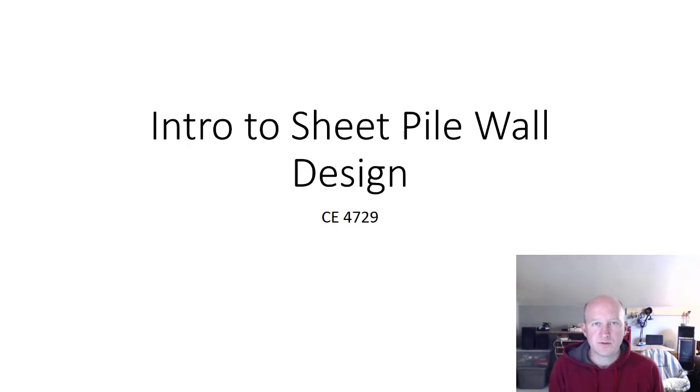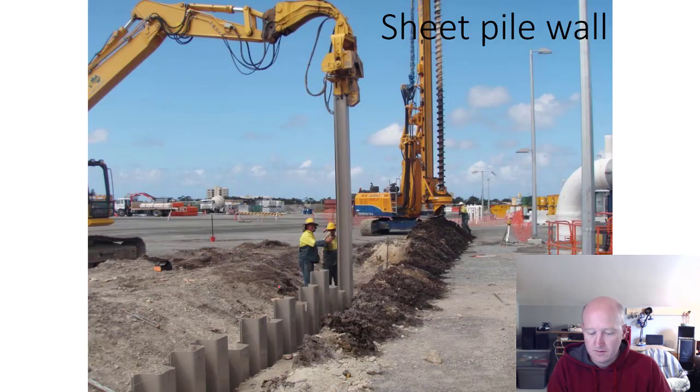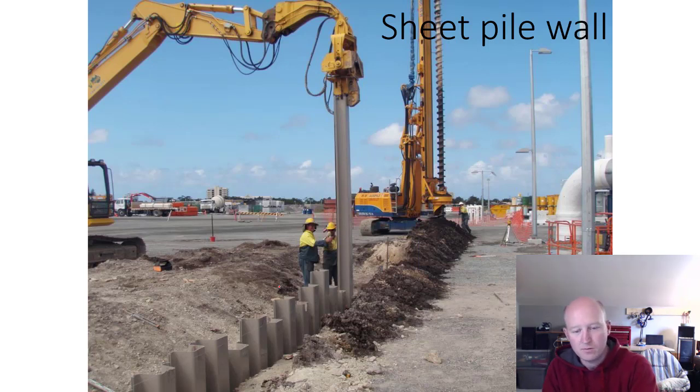We're going to talk about sheet pile walls now. This would be the last new material. Sheet pile walls are almost always structural steel that are mashed into the ground and they interlock together. Oftentimes they'll have this sort of corrugated pattern to them. Here's some sheet pile walls that are being vibrated into the ground with an excavator with a special attachment for gripping onto these things.